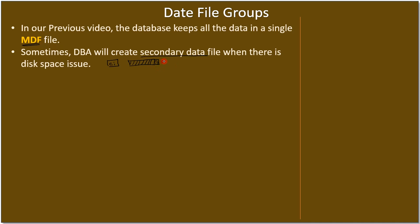Let's say 95 percent of disk space is used, or the DBA knows that a specific table may grow bigger in a short time frame — within six months or one year. In that case, the DBA can create multiple secondary data files and point them to a different partition or even a completely different disk altogether.